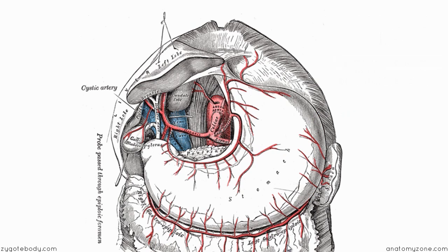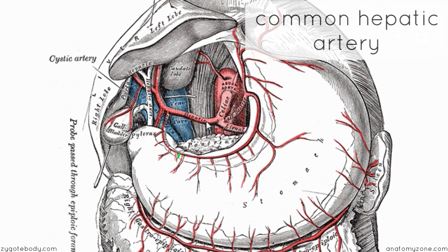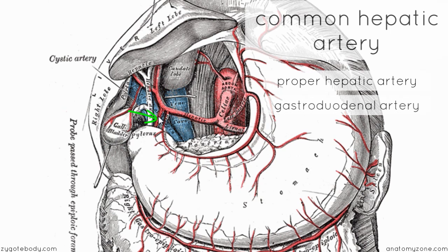Now we're coming on to the final branch of the celiac trunk — the common hepatic artery. As it comes off the celiac trunk, it turns right and it has two terminal branches. It gives off the proper hepatic artery which goes to the liver, and it's got the gastroduodenal artery which descends to supply the duodenum and the head of the pancreas. It also gives off a branch which supplies the surface of the stomach.